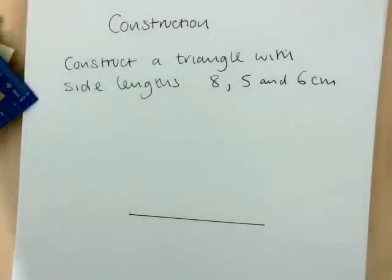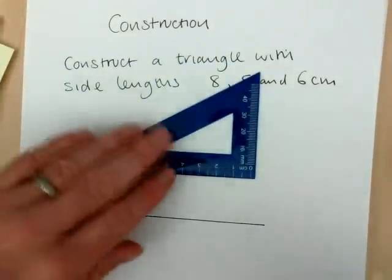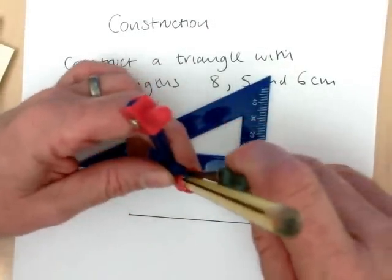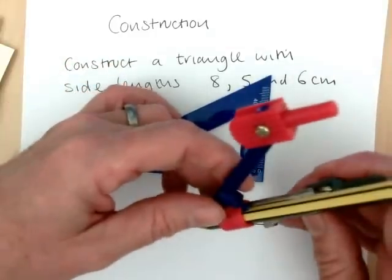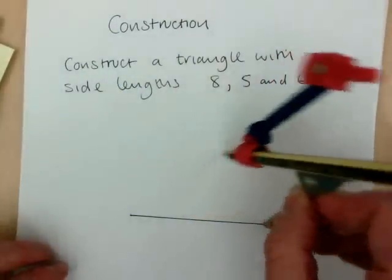I measured it to 8 centimeters. Then I need to get one of the compasses and first of all set them to one of the other lengths. I'll set it to 5 centimeters. And I'll take it to one of the ends, to the point on the right on the end. OK, and then draw the arc.